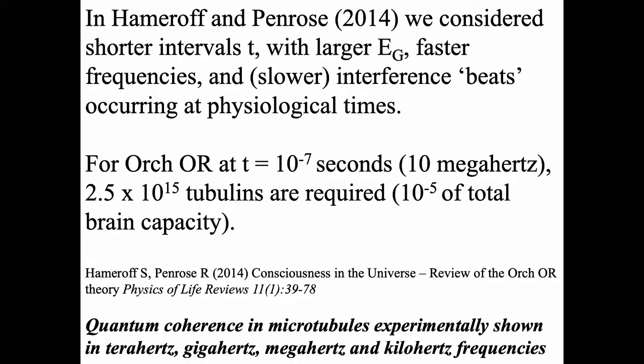Subsequently, when the structure of tubulin became known around 2009-2010, we revamped the theory and considered shorter time intervals T with much larger E sub G, therefore faster frequencies, which could give rise to interference beats for slower processes — because cognition and consciousness occur over hundreds of milliseconds. The specious moment or EEG ranges from 10 to a thousand milliseconds. We can account for slower events through interference beats — just like in music, if two instruments are slightly out of tune, they will produce beats at a much slower frequency.